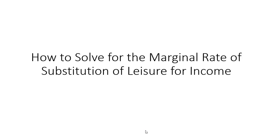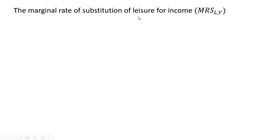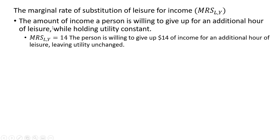In this video we're going to look at the marginal rate of substitution of leisure for income and then solve a few problems. The marginal rate of substitution of leisure for income gives the amount of income a person is willing to give up for an additional hour of leisure while holding utility constant.